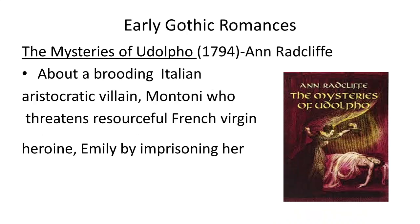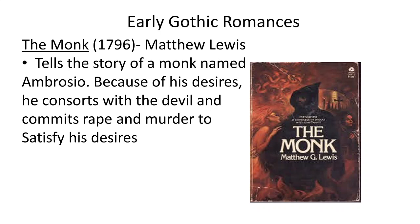Another early gothic romance is The Mysteries of Udolpho by Ann Radcliffe, published in 1794. This romance is about an Italian aristocratic villain named Montoni who threatens a French heroine named Emily — he imprisons her and subjects her to all kinds of torture. Then there is The Monk, another gothic romance by Matthew Lewis, which tells the story of a monk named Ambrosio who, because of his desires, keeps company with the devil and commits rape and murder to satisfy those desires.